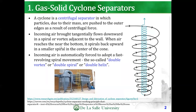When air reaches near the bottom, it spirals back upwards — look at the blue inside — in a smaller spiral in the center of the cone. So incoming air is automatically forced to adopt a fast revolving spiral movement, the so-called double vortex, or sometimes double spiral or double helix.